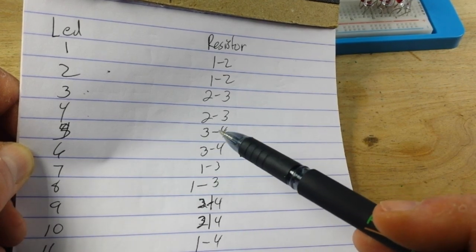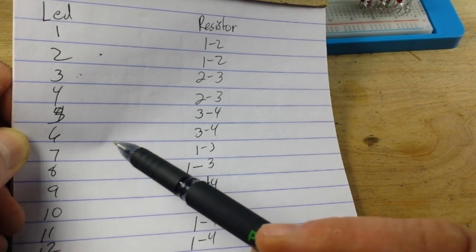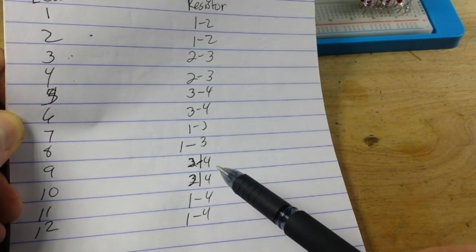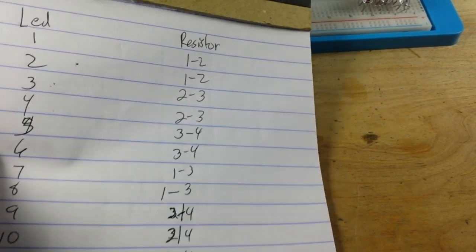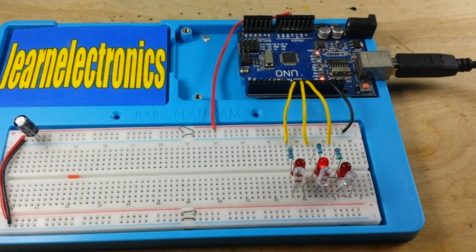5 and 6 attach between 3 and 4. 7 and 8 between 1 and 3. 9 and 10 between 2 and 4. And 11 and 12 between 1 and 4. So that's all the connection that there is to making this work. And you can see it's really pretty simple, how everything goes together.